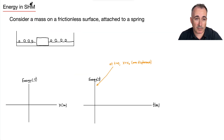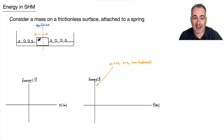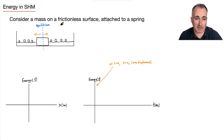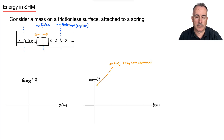Now let's consider energy in simple harmonic motion. We'll look at a mass on a frictionless surface free to go left and right. We define the equilibrium position — the middle point where, if there were friction, the mass would eventually stop. Then over to one side is the maximum displacement, also called the amplitude. This is symmetric, so there's also a maximum displacement on the left side.